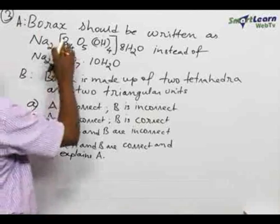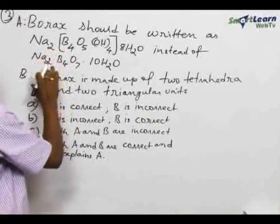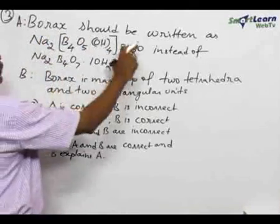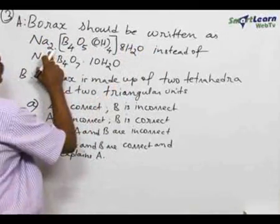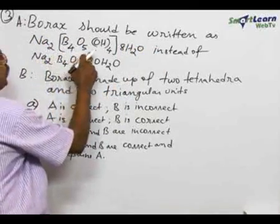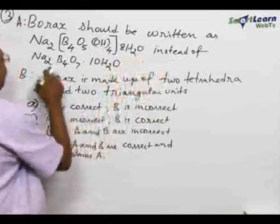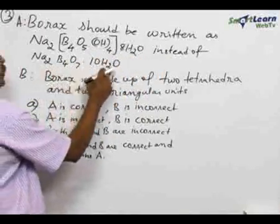Number 3, the statement form of question and we have to analyze and give the correct opinion. Statement A, borax should be written as Na2[B4O5(OH)4]·8H2O instead of Na2B4O7·10H2O.